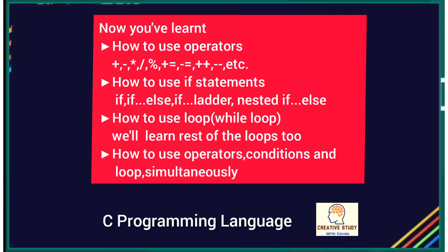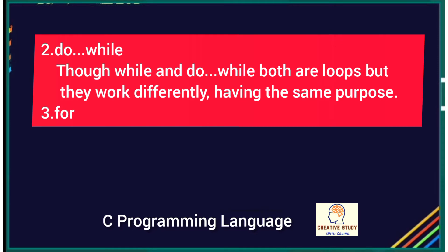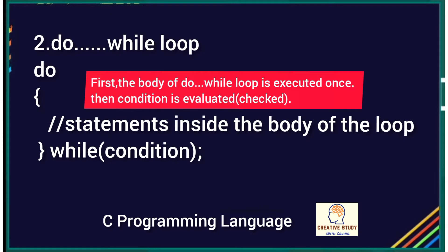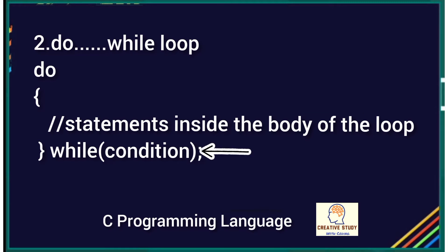Now let's learn the remaining loops. The second one is the do-while loop. While and do-while both are loops but they work differently, having the same purpose. The syntax of do-while loop: first the body of the do-while loop is executed once, then the condition is evaluated. If the condition is true, the body of the loop is executed again and the condition is re-evaluated. This process goes on until the condition becomes false.